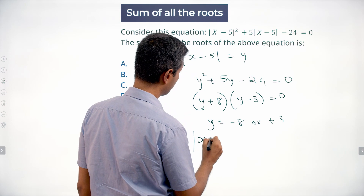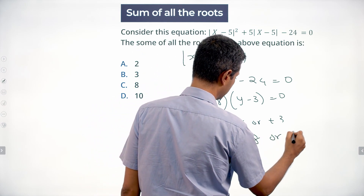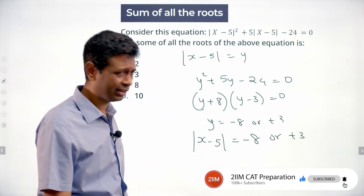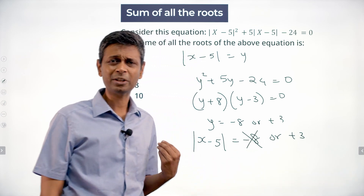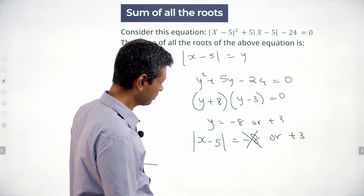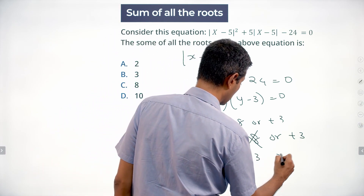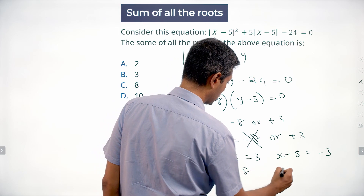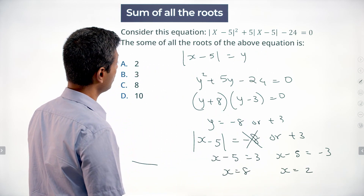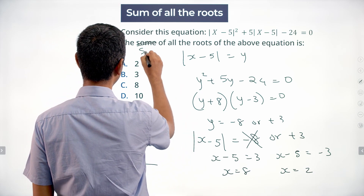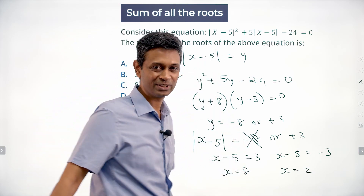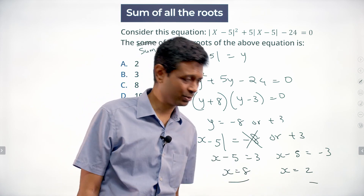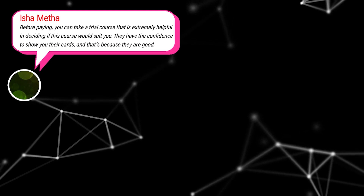That means modulus of (x minus 5) is minus 8 or plus 3. Now, modulus of a number can never equal minus 8, so that solution is rejected. Modulus of (x minus 5) equals 3 means x minus 5 equals 3 or x minus 5 equals minus 3, giving x equals 8 or x equals 2. The sum of all roots of the above equation is 8 plus 2, which is 10. Very routine question.